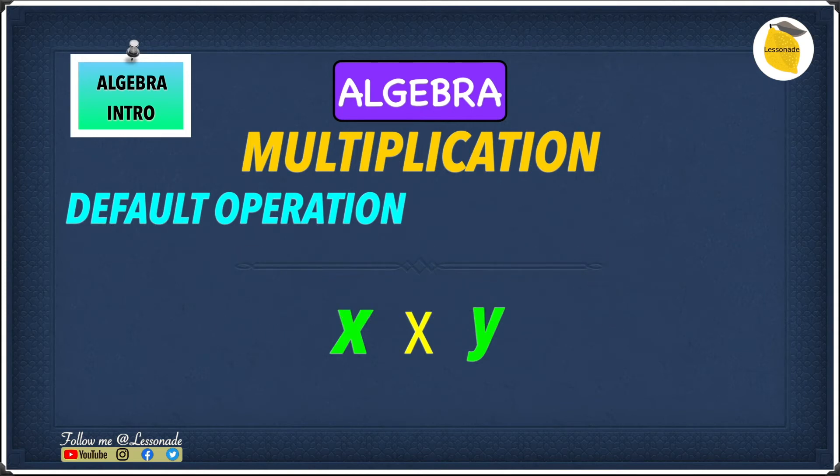So an example of it would be, for example, it could be x, y. And xy is obviously a multiplication, as we said before. But the thing is, there is no sign in between the x and the y. But since multiplication is a default operation, you need to consider it as a multiplication.